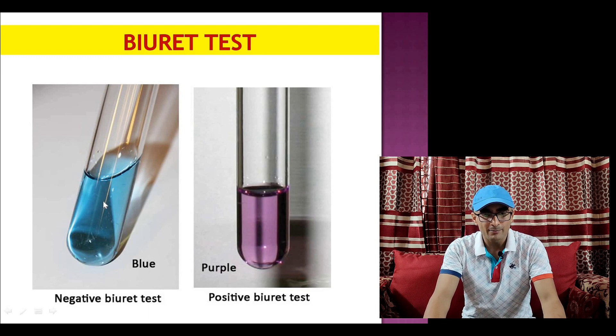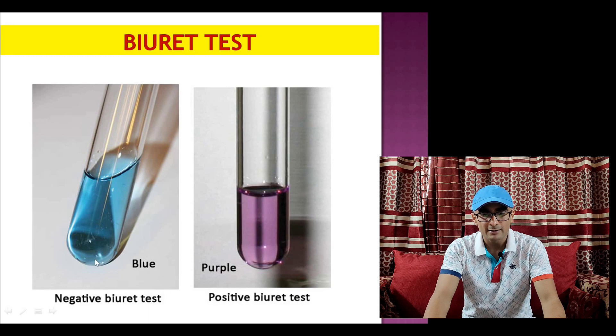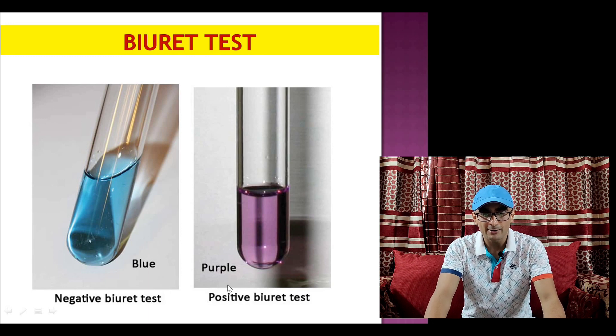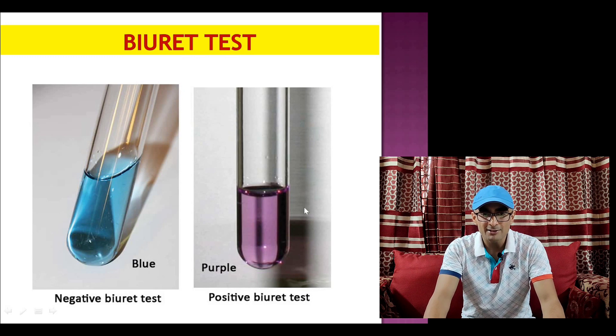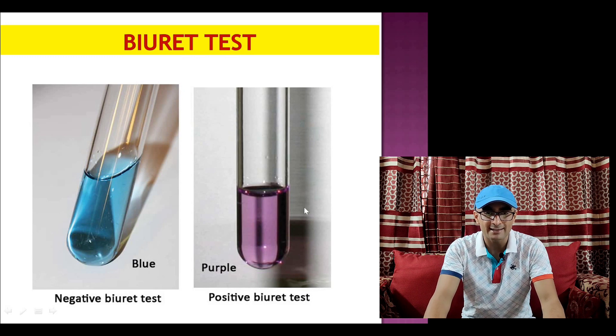A negative test gives a bluish color and when the complex of copper is formed it gives a deep purple color which is a positive indication of Biuret test.